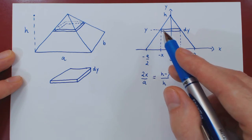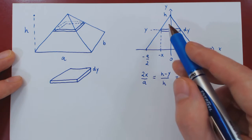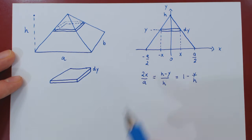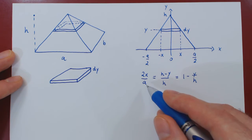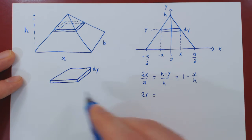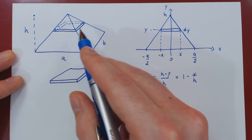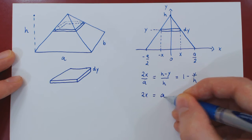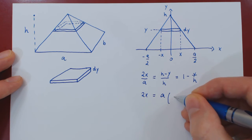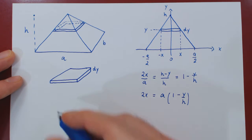We want the length of a side of our arbitrary infinitesimal slice, which is 2x. We isolate 2x by multiplying both sides by a. So 2x — the length of this side of the generic horizontal slice — is given by a times (1 minus y/h). And so we have the length of this side.